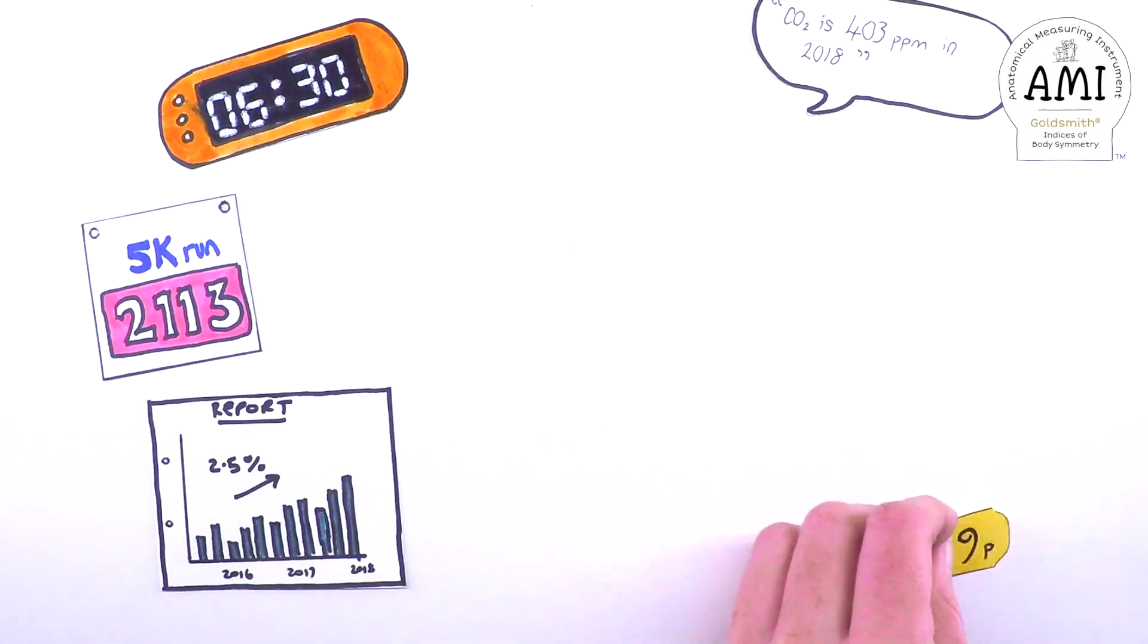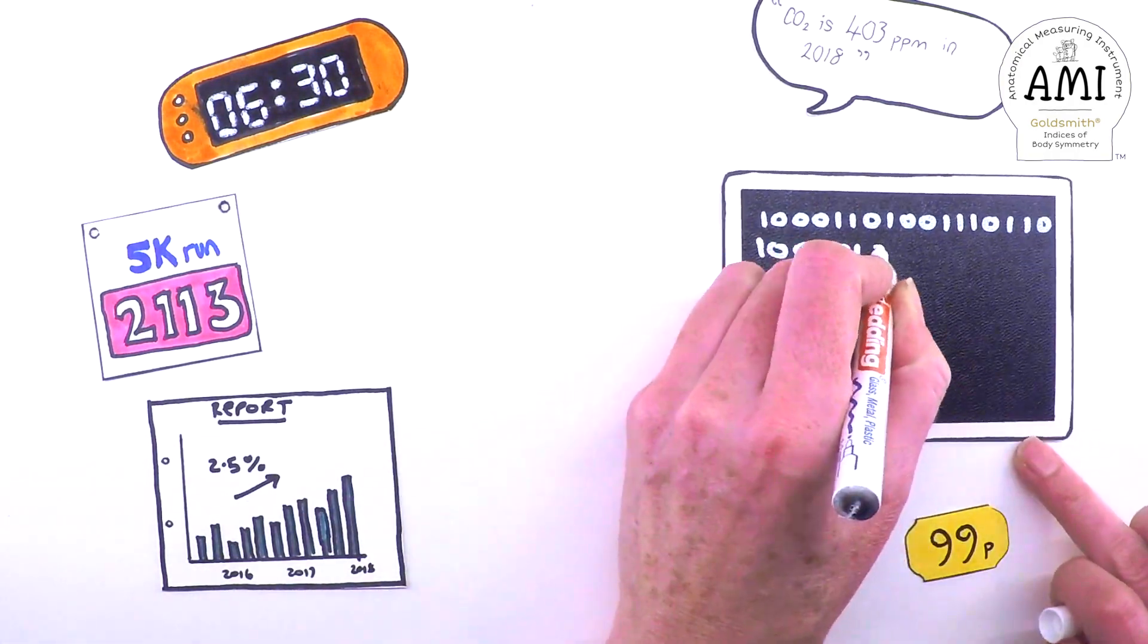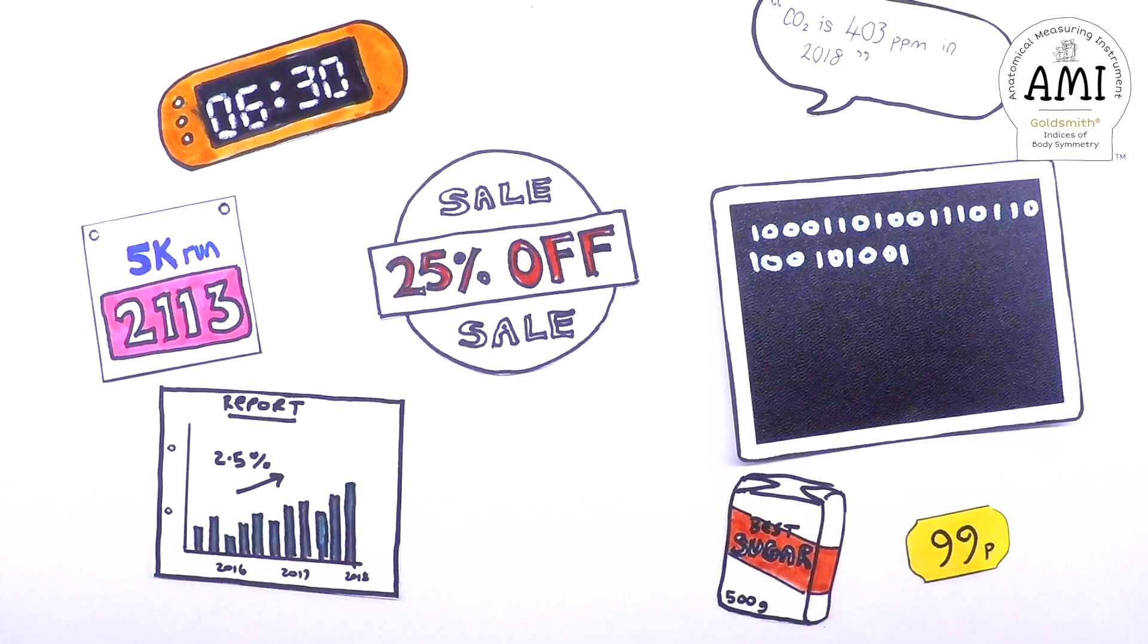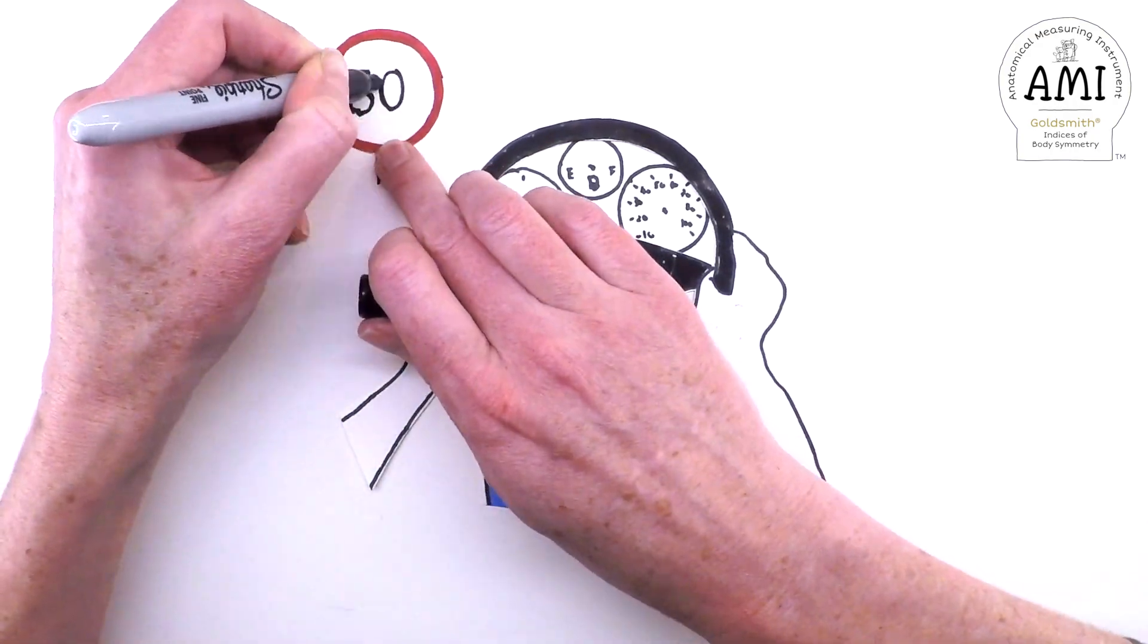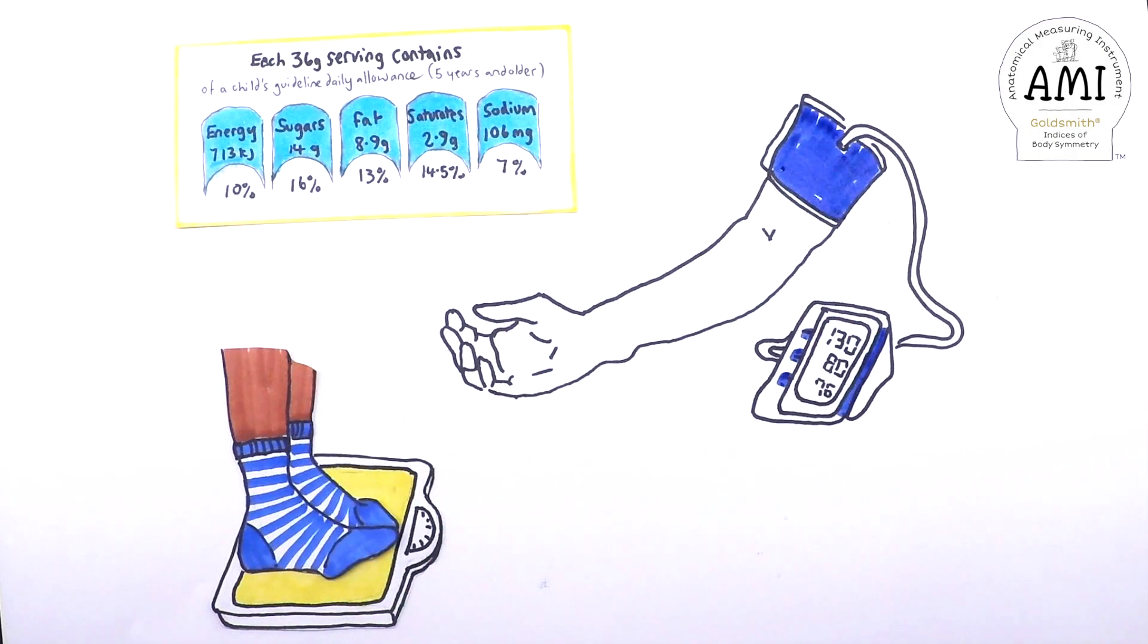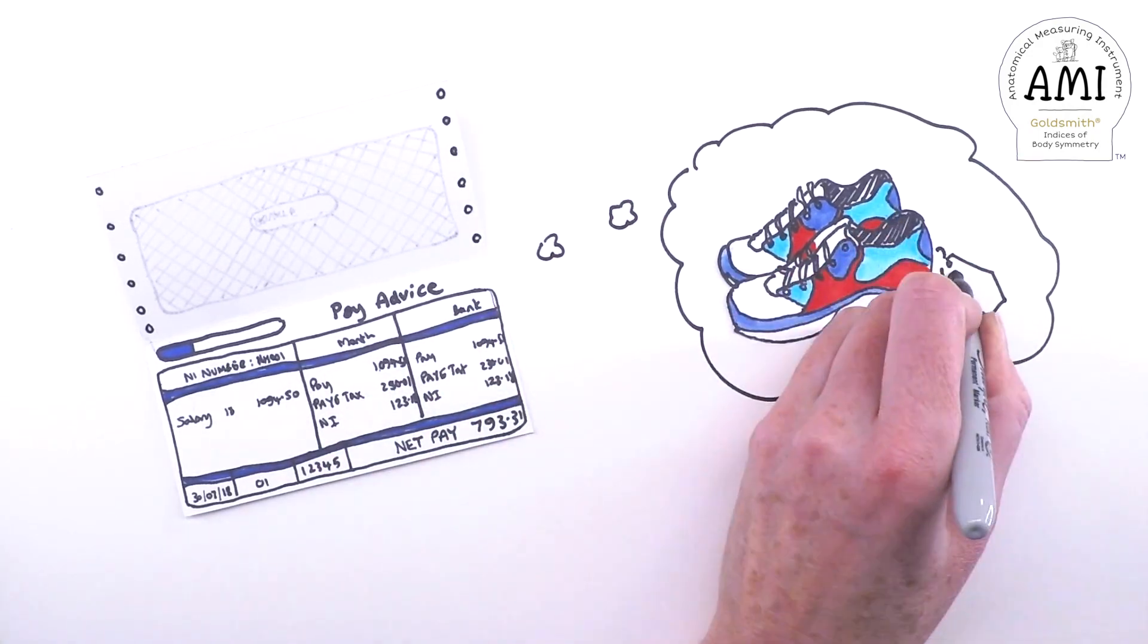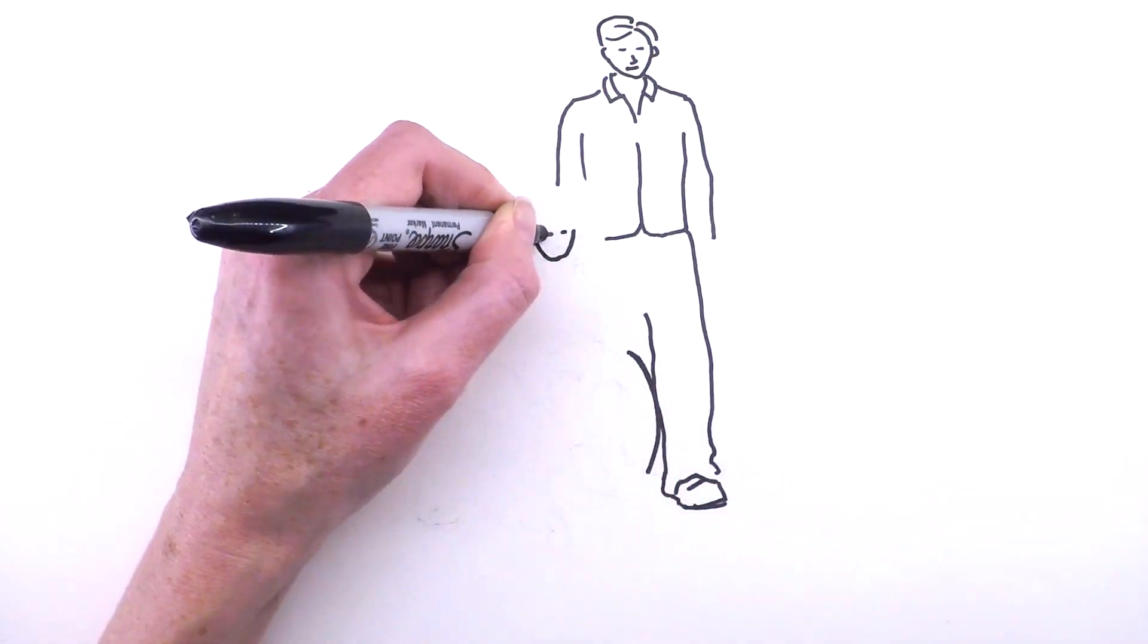Love them or hate them, numbers are everywhere. Sometimes they're baffling, sometimes exciting, but always they inform us. Numbers keep us safe when we're driving along the road. Measurements help us stay fit and well, giving us indicators about our health. Numbers help us decide how we spend our money, but they aren't the whole story—they're only part of it.